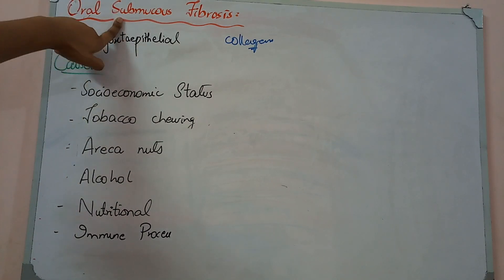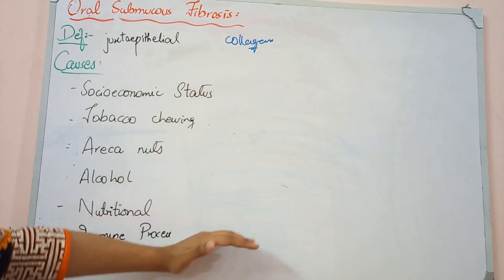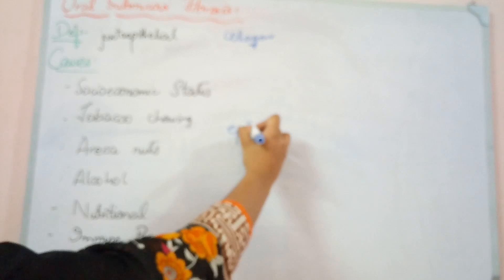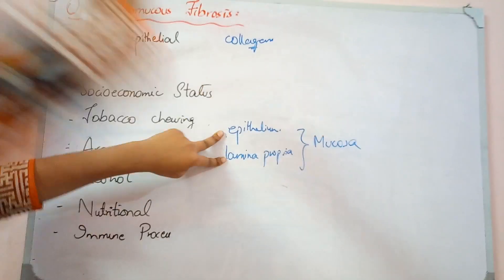Submucous refers to the layers beneath the mucosa. The oral cavity is part of the GIT with histological layers. There are layers of epithelium, then lamina propria which is connective tissue. Together, epithelium and lamina propria form the mucosa of the oral cavity.